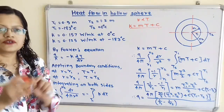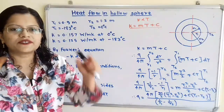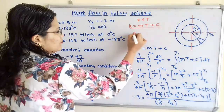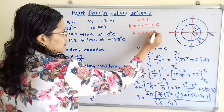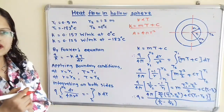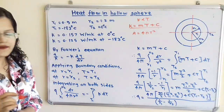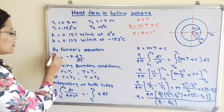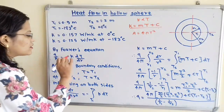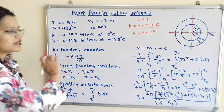Now regarding the area: heat flow is taking place along the radial direction for a complete sphere, so the area equals 4πR², meaning area is a function of R. Observing Fourier's equation, there are two variables — temperature and radius. Q is not a function of R so we take Q outside the integration. Since K is a function of T, we must also integrate K.